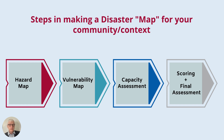Step one is to produce a hazard map, which looks at the various hazards in your community and how their impacts might be. You secondly produce a vulnerability map, which looks at the areas most vulnerable within your community if a hazard does come. The third step is conducting a capacity assessment to see whether your community has the capacity to respond. And finally, in step four, you conduct a scoring system looking at the previous three entities to provide a final assessment and map of the various hazards, looking at where the priorities may lie for your disaster planning.